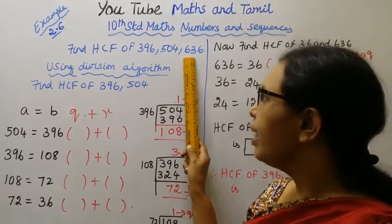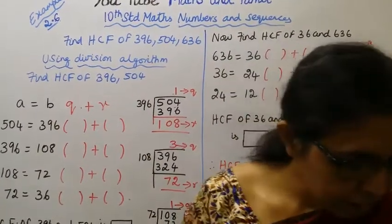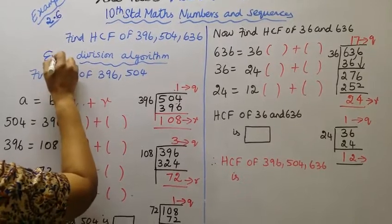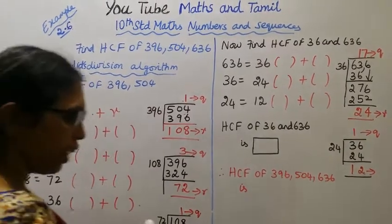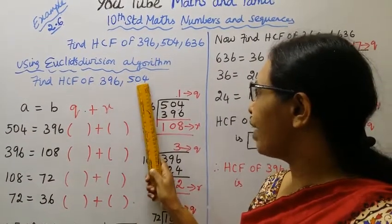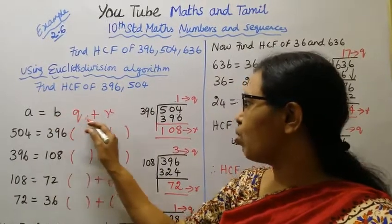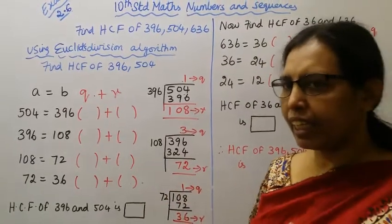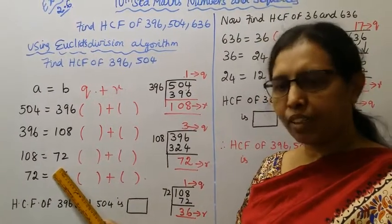Okay, and for the three numbers we have to find HCF. You have to use Euclid's division algorithm. Using Euclid's division algorithm, we can find the HCF. The formula is: A is equal to BQ plus R. When the remainder R is equal to 0, that remainder gives us the HCF.